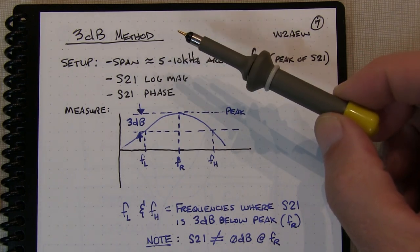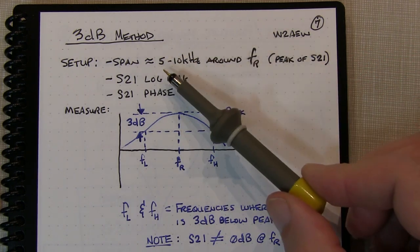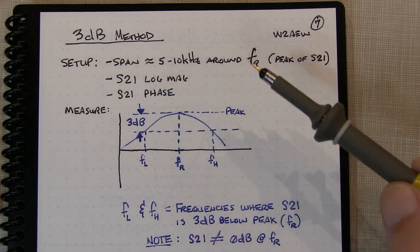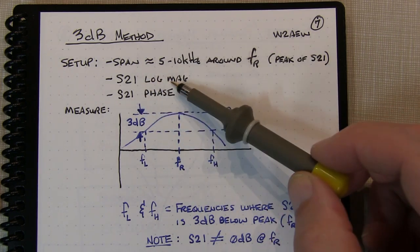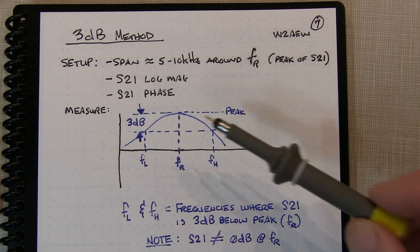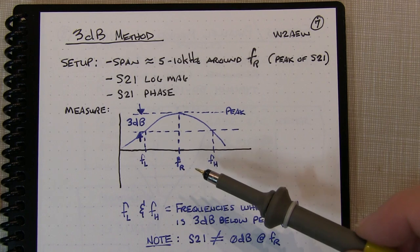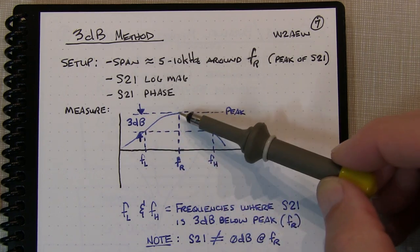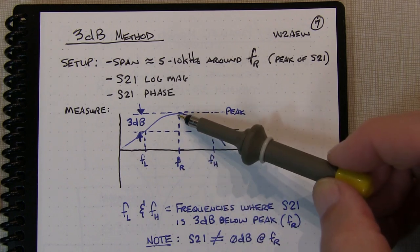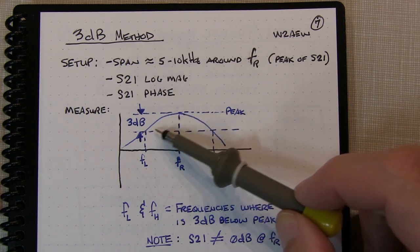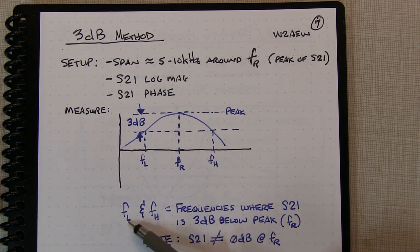The minus 3 dB method is actually pretty similar to the phase shift method — we still use a 5 to 10 kHz span around the series resonant frequency and look at S21 log magnitude. What we want is the point where S21 is 3 dB down from its peak value. So first we measure S21 at its highest point — already determined to be about minus 0.6 dB — meaning we want to find the frequencies on either side where S21 reaches minus 3.6 dB.